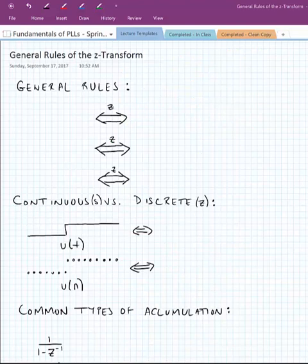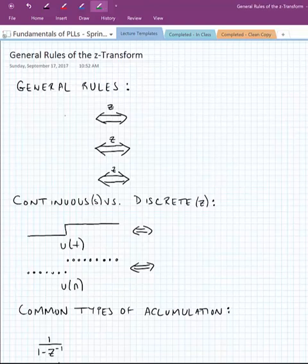All right. Now let's look at a few general rules for Laplace transforms. So in general, we have a function that's in the time domain. And if we do a z-transform on it, we get a function in the z-domain. Of course, this time domain is a discrete-sampled time domain.